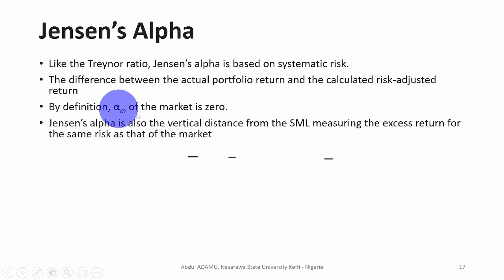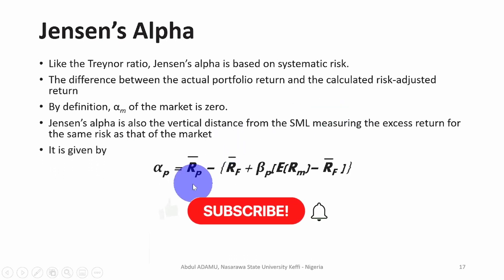So since the beta of the market is equal to zero, if an alpha value is positive, that is greater than zero, it means that the portfolio has outperformed the market. If it is less than zero, it means it underperformed relative to the market. The formula for Jensen alpha is the portfolio return less the CAPM model.